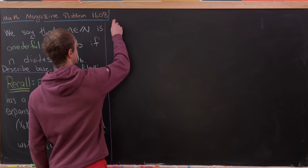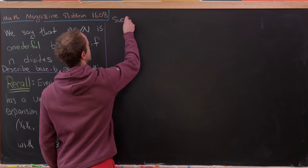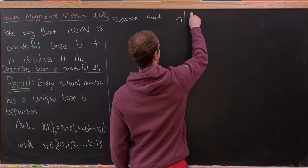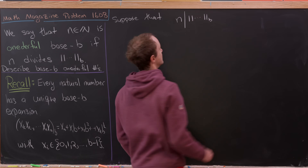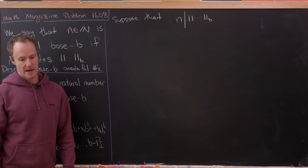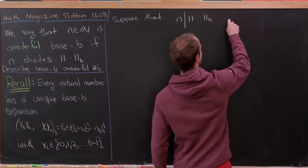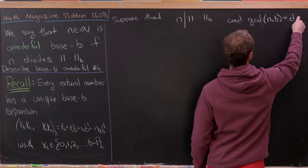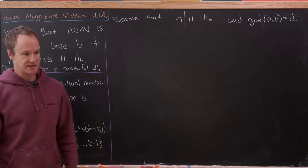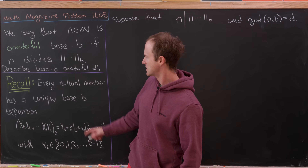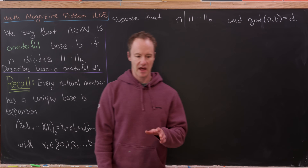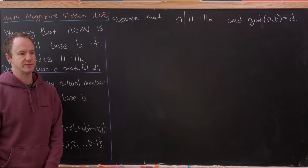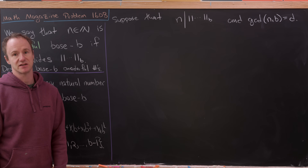Let's start by supposing that n divides the number 1,1,1,...,1 in base b. Let's also suppose that the gcd of n and b is equal to d. We're looking at the gcd because we're talking about divisibility, and the gcd is a really important notion when talking about divisibility, so it makes sense to bring it in.